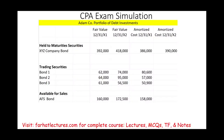Welcome to this session in which we will solve a CPA exam simulation that deals with debt investments. In this simulation, we have a portfolio of debt investments for Adam Company. Under debt investments, we could have three categories: held-to-maturity bonds, trading securities bonds, and available-for-sale bonds. We are given the fair value of year X1, the fair value of year X2, amortized costs for X1, and amortized costs for X2.